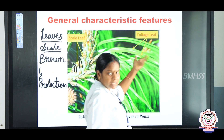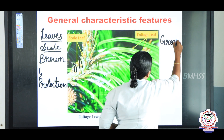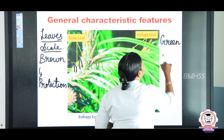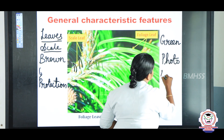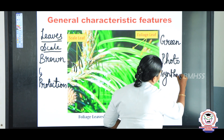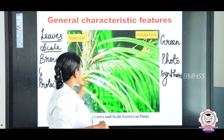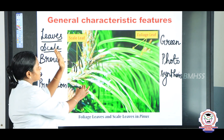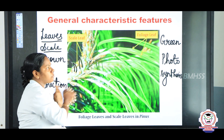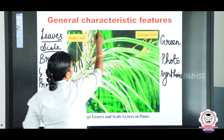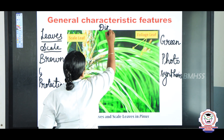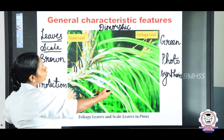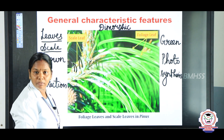The foliage leaves are green in color and possess chlorophyll, so their main function is photosynthesis. One more difference is that scale leaves are short, but foliage leaves are long. Since the plant has two types of leaves, we call this condition dimorphic — 'di' means two, 'morphic' means appearance. Since the leaves are in two different varieties, we call them dimorphic leaves.